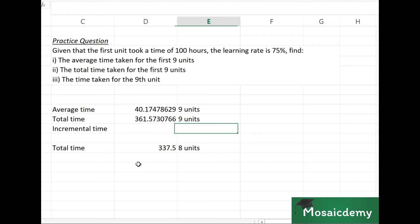So the incremental time for the 9th unit will be 361.57 (the total time for 9 units) minus 337.5 (the time taken for 8 units), so 24.073 approximately. These calculations need to be on your fingertips - immediate, easy calculations for total time and incremental time for a particular unit so you can do this quickly in the exam.